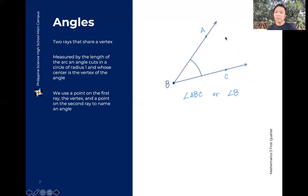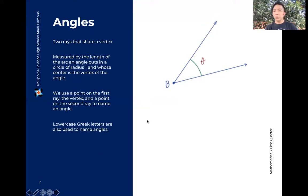We use a point on the first ray, the vertex, and a point on the second ray para bigyan ng pangalan yung angle natin. So we could call this angle A, B, C. Now if there is no ambiguity kung saan mag, kung anong angle yung pinag-uusapan natin. Like for example, kung meron akong isa pang ray dito, I could be talking about this angle or this angle. But here, in this case, isolated yung angle natin. Pwede natin tawagin na lang siya with the vertex, angle B. Sometimes, lowercase Greek letters are also used to name angles or to denote yung measurement ng angles natin.